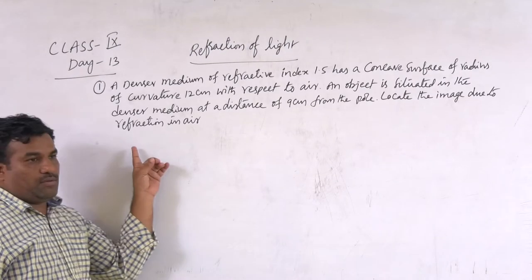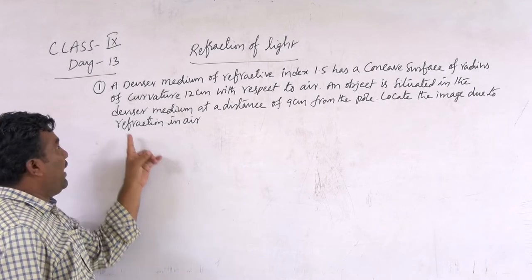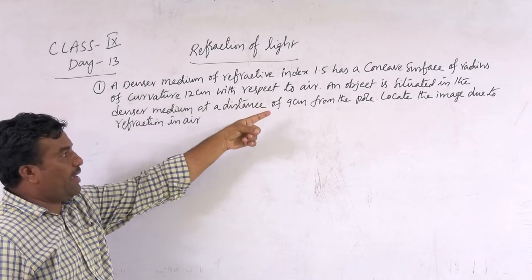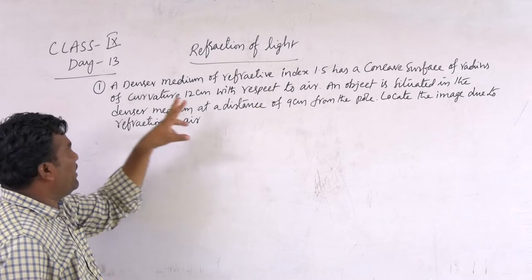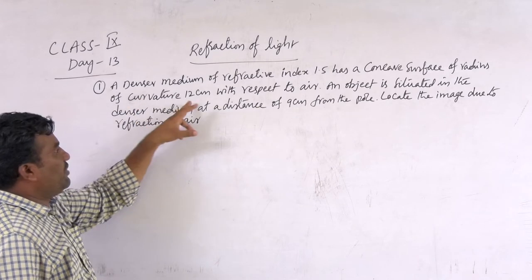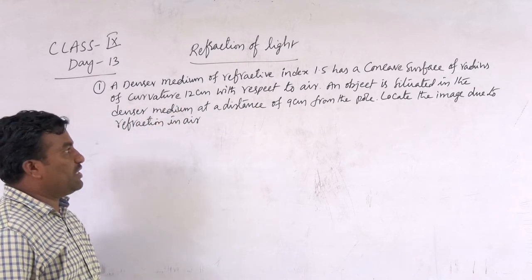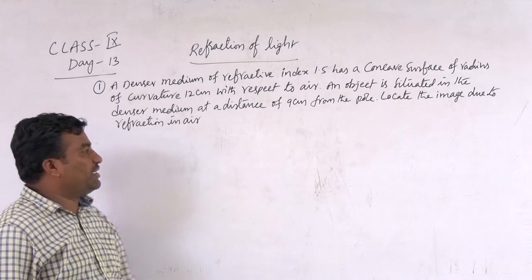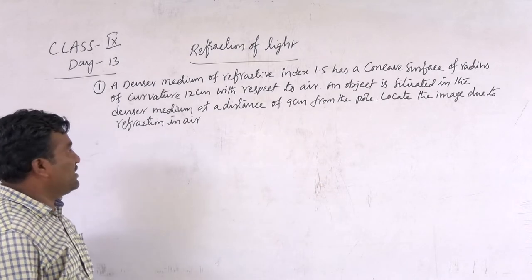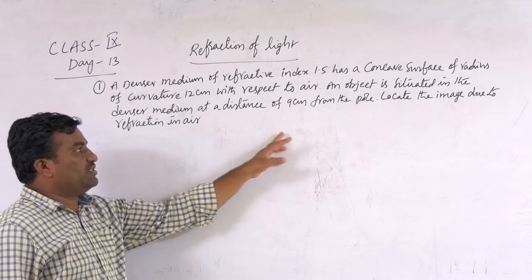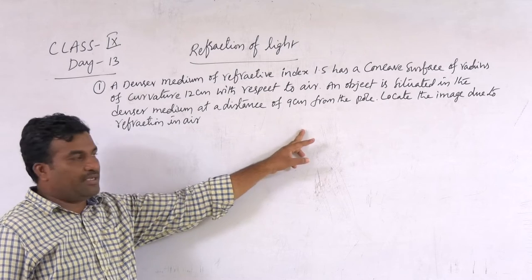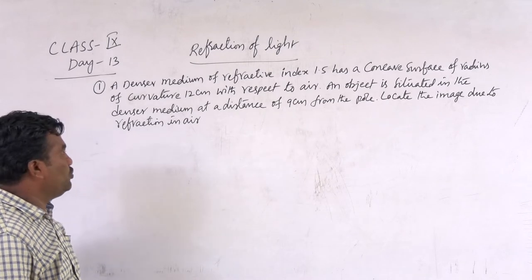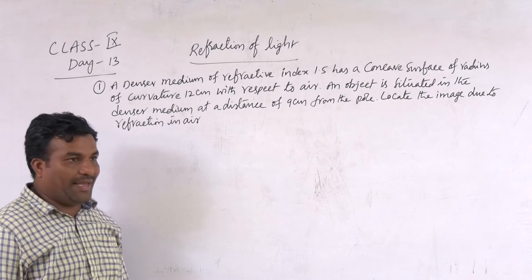Let us go with questions. A denser medium of refractive index 1.5 has a concave surface of radius of curvature 12 cm with respect to air. An object is situated in the denser medium at a distance of 9 cm from the cone. Locate the image due to refraction in air.